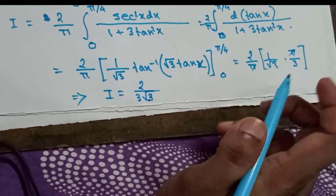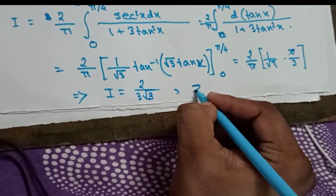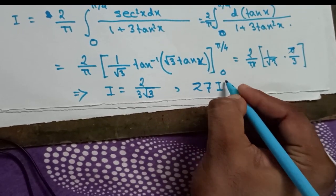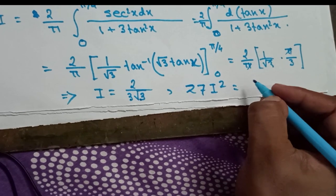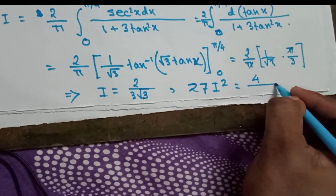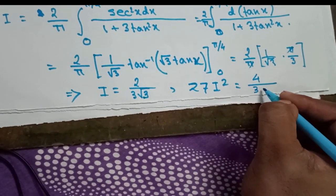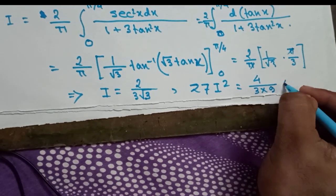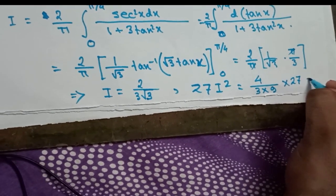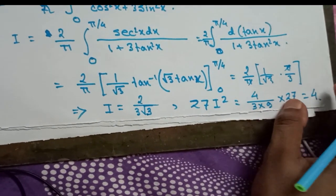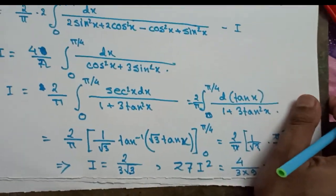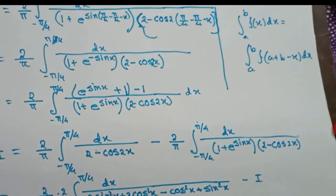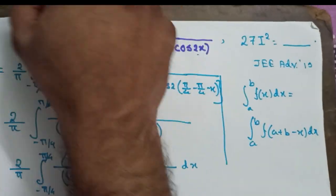Now we are taking 27I². So 27I² is becoming: this is 4 times 1/(3 × 9) times 27, so it is 4. What was actually our desired result? This one is 4.